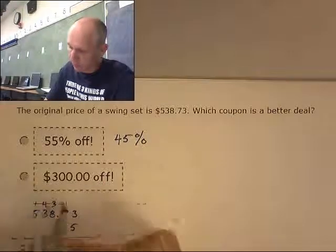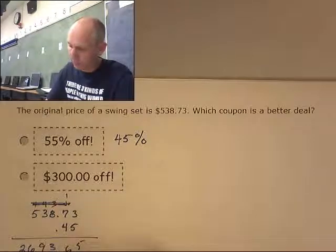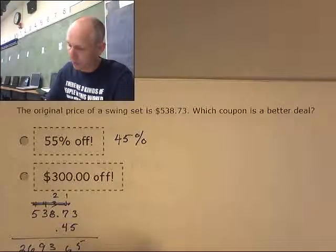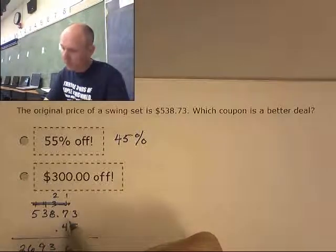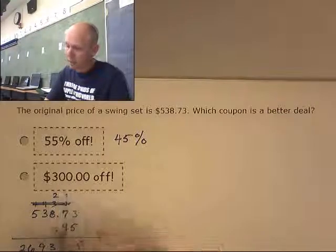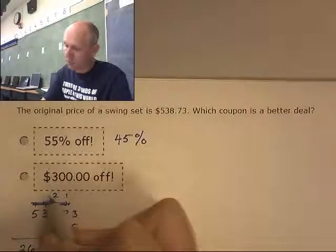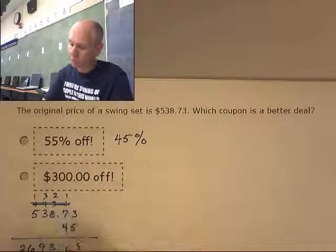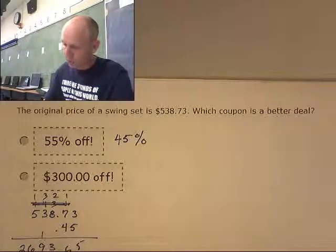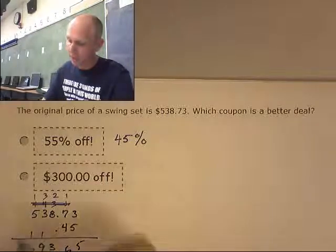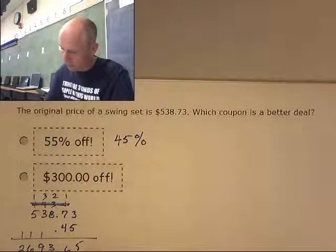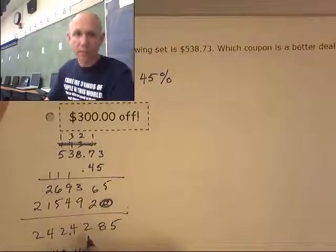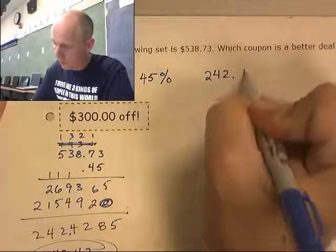Working through the long multiplication of 0.45 times $538.73: four times three is twelve, four times seven is twenty-eight, four times eight is thirty-two, four times three is twelve, four times five is twenty — carrying through all the digits. With four decimal places, that comes out to $242.42.